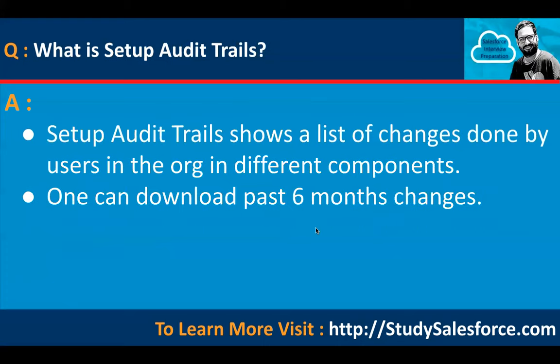What is setup audit trail? Setup audit trail shows a list of changes done by a user in the org across different components. One can download the past six months of changes. To find it, go to Setup and in Quick Find search for 'Setup Audit Trail.'